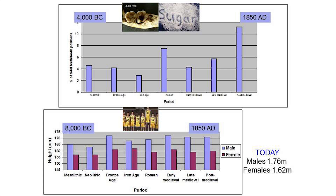Then, if we look down here, we've got height, again through to the post-medieval period. When you get to the early medieval period, things don't really change that much in terms of height. There's obviously a difference between males and females that we would expect, and this is today's British population average heights.